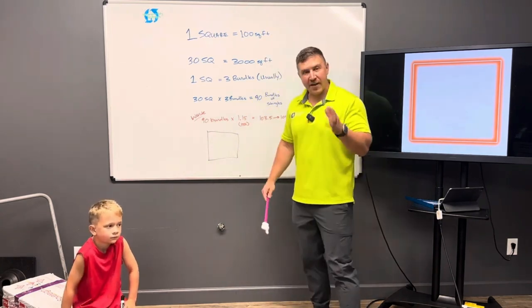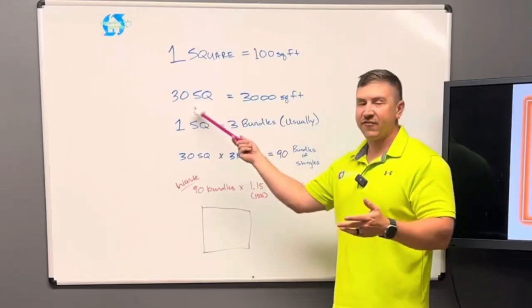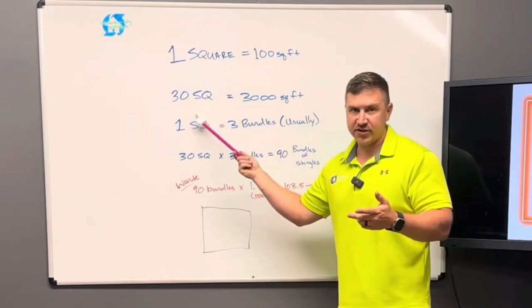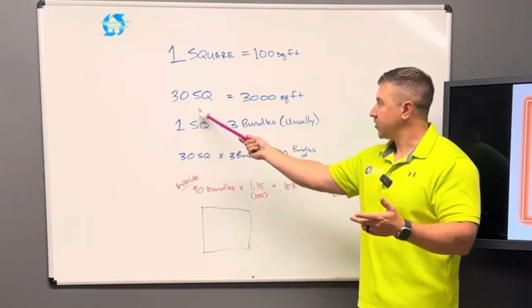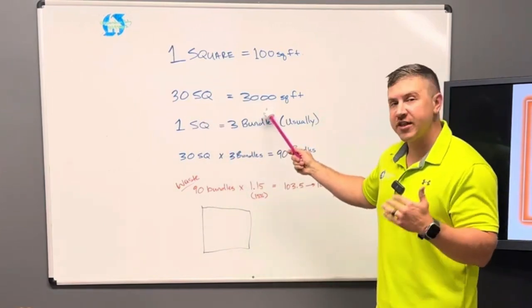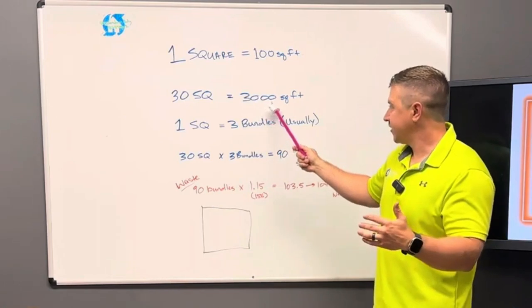The average size roof in America is around 30 squares, so doing the math, that's actually 3,000 square feet.